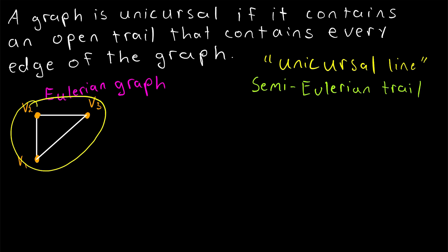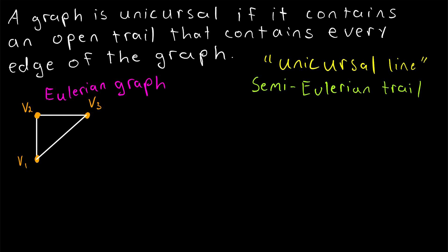Notice that in this graph, before adding that extra edge that joined V1 and V3, we had a unicursal line from V1 to V2 to V3. This is no longer a unicursal line of the graph since it doesn't contain the edge joining V1 and V3. In fact, this graph contains no unicursal line and is thus not a unicursal graph.